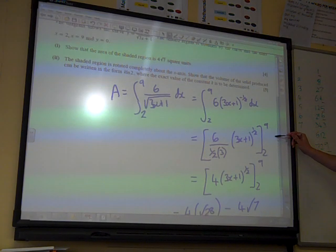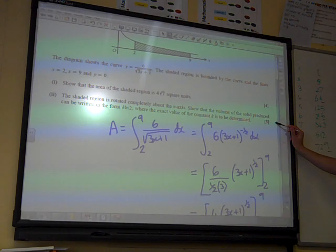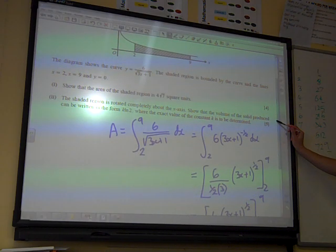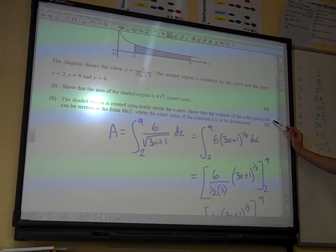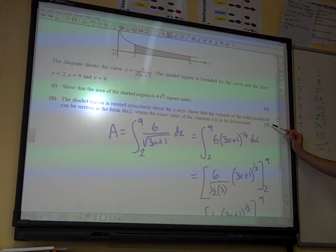Okay, then it says, the shaded region is rotated completely about the x-axis. We've got to read that carefully just to make sure we know which way it's being rotated, don't we? Show that the volume of the solid produced can be written in the form k and m2, where the exact value of the constant k is to be determined.